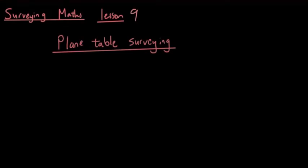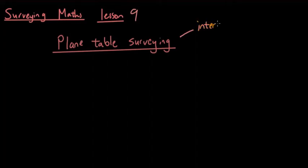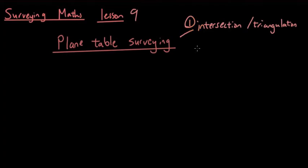Hey guys, it's Eddie the Magic Monk. Can't believe we are now up to lesson 9 in surveying — we've already done eight lessons. Last lesson we talked about plane table surveying. Plane table surveying has three different methods. Last lesson we talked about intersection and triangulation, which are the same thing — that's method number one.